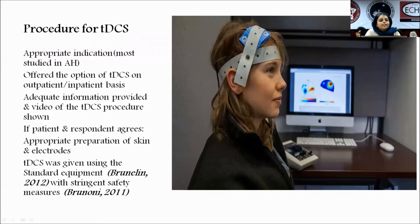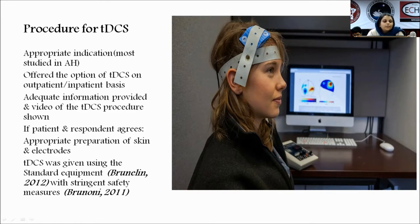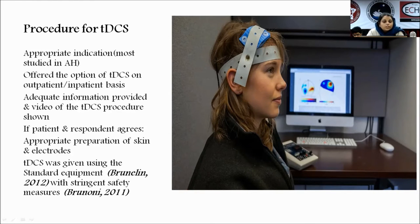Let's come to the procedure for tDCS. Before planning for a tDCS session, there should be an appropriate indication — for example, in alcohol use to decrease craving or increase time to relapse, or in schizophrenia to decrease auditory hallucinations not responding well to antipsychotics. The treatment option should be offered on an outpatient or inpatient basis. Adequate information must be provided and a video of the procedure should be shown. Since tDCS is predominantly used for research, informed consent is very important.